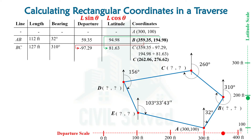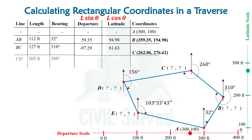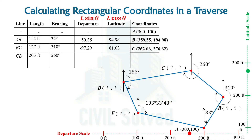On completing the process we will be having the coordinates of point C, and the same can be shown on this latitude and departure scale. Moving further, for the calculation of the coordinates of point D, we need to calculate the latitude and departure for CD line. On doing the calculation we get the departure and latitude of CD line.